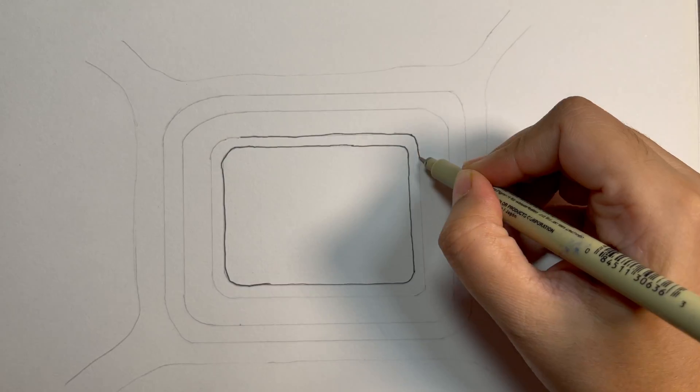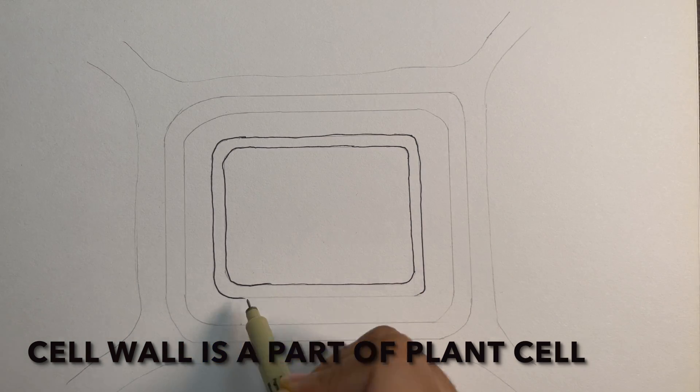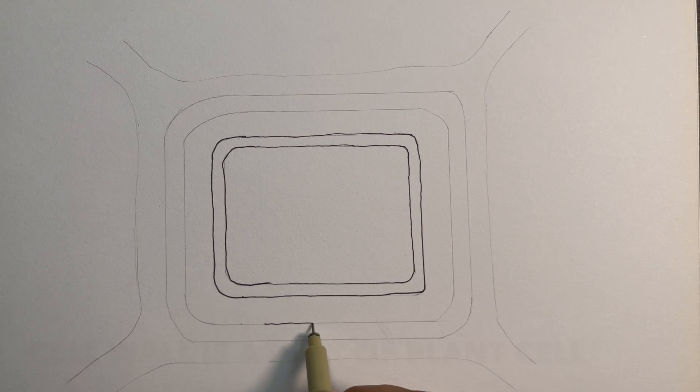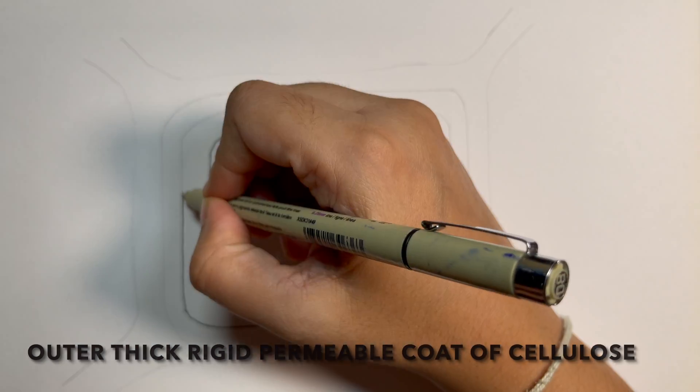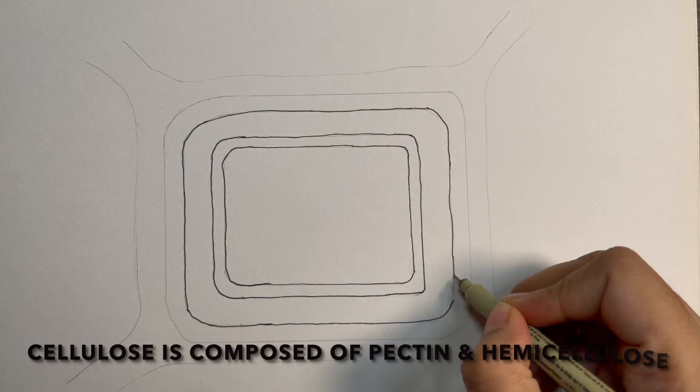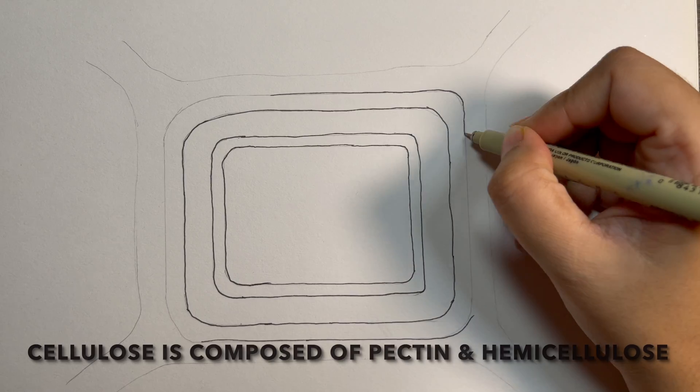A cell wall is a part of plant cell. It is the outer thick rigid permeable coat formed of cellulose. The cellulose is again made up of pectin and hemicellulose.